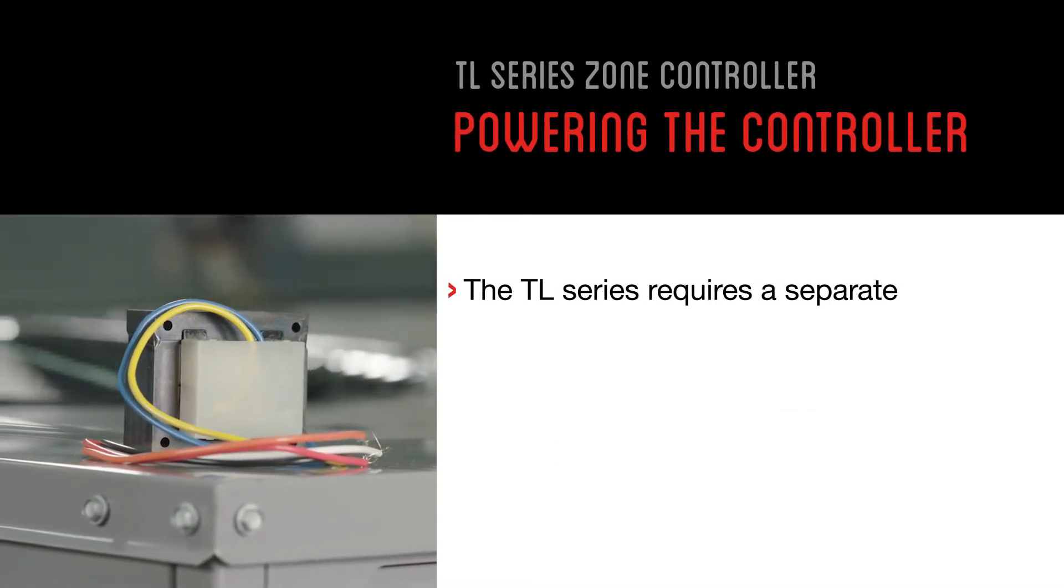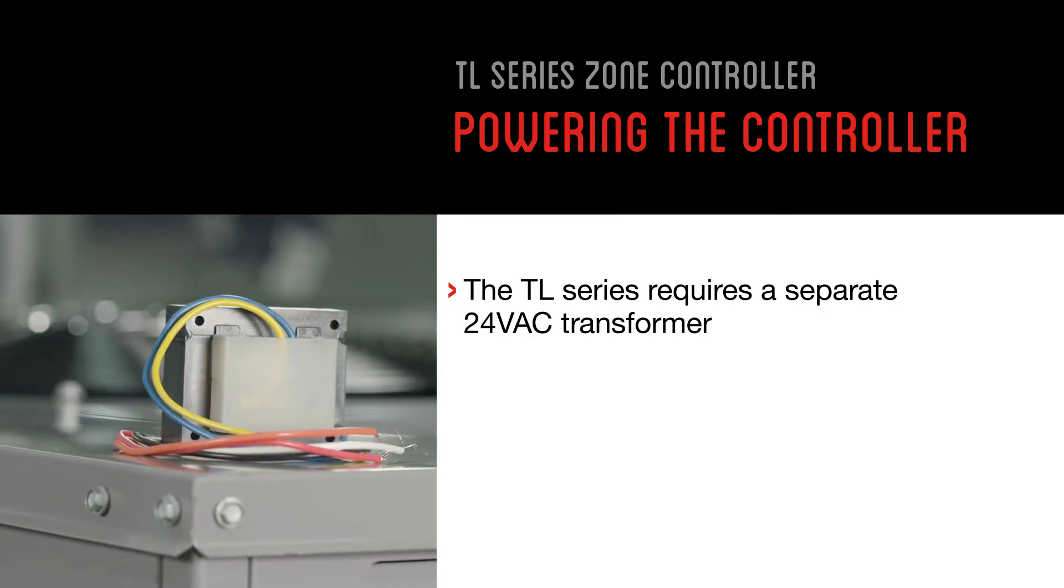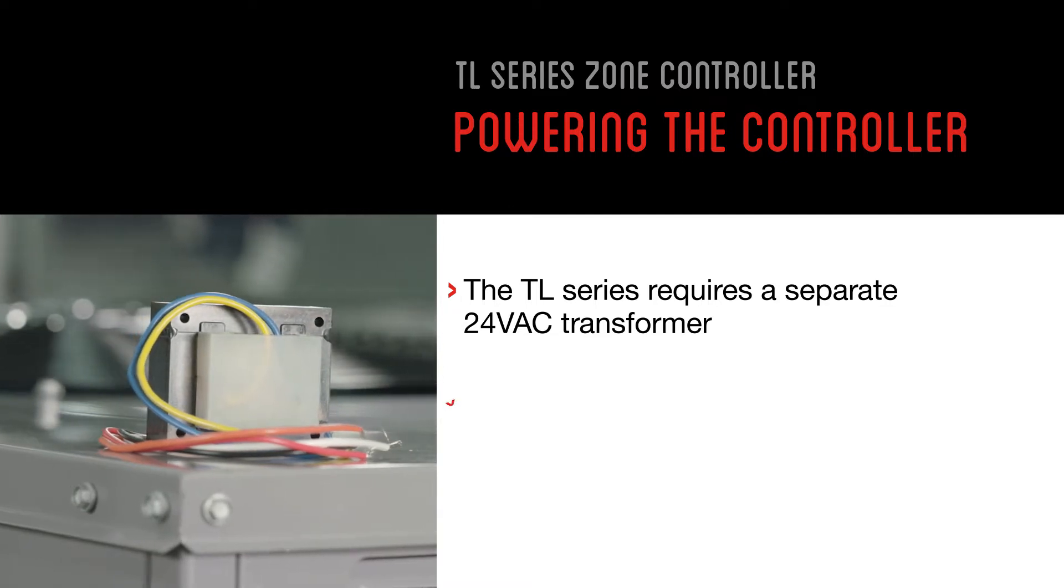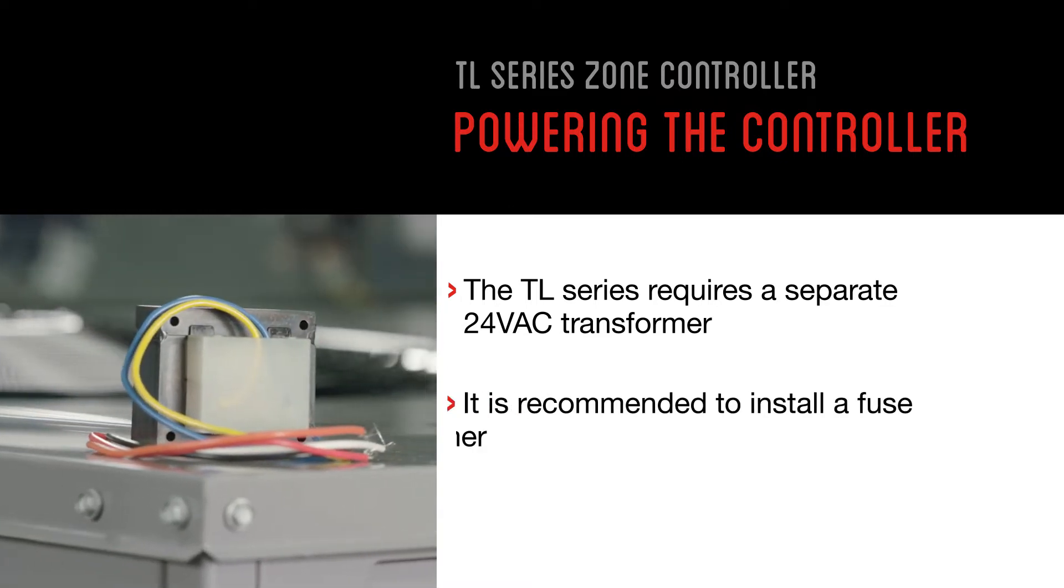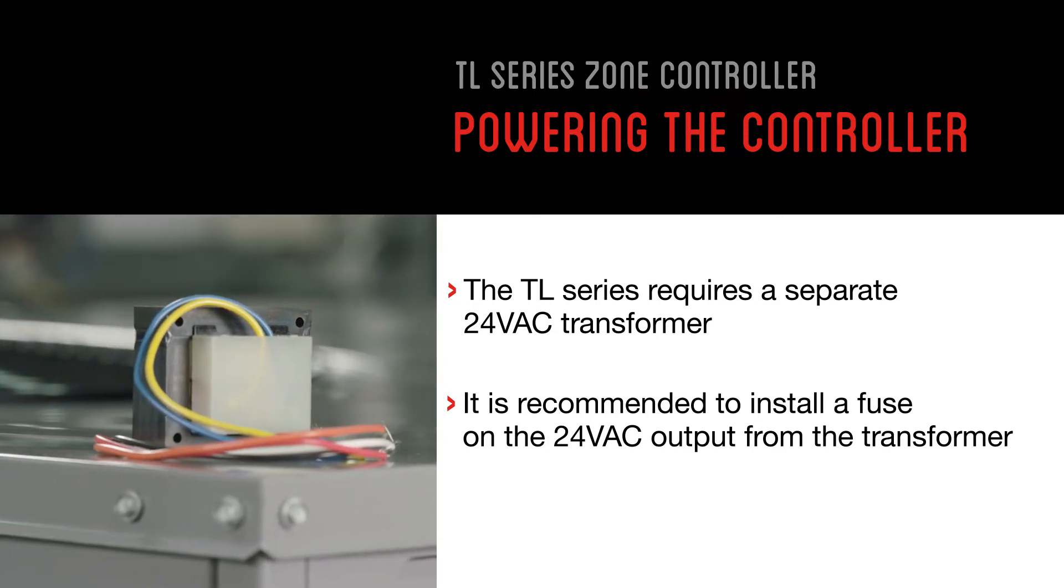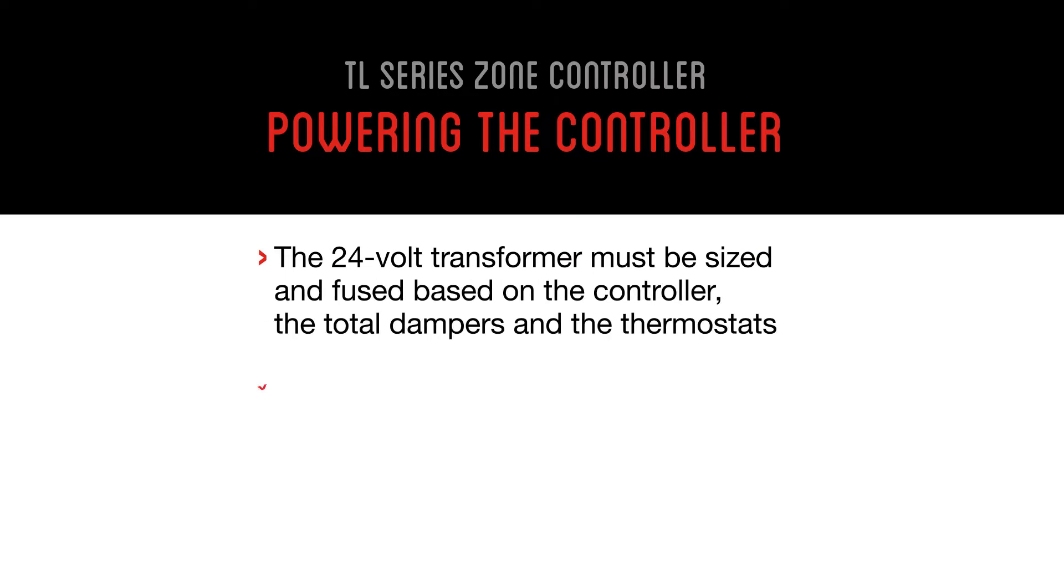Be aware that the TL series system requires a separate 24-volt AC transformer, which is not included, for powering the TL series controller, zone thermostats, and dampers. It is recommended to install a fuse on the 24-volt AC output from the transformer. Note that the 24-volt transformer must be sized and fused based on the controller, the total dampers, and the thermostats. Reference the transformer sizing charts in the install guide.